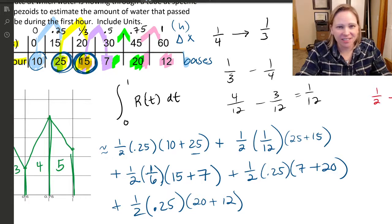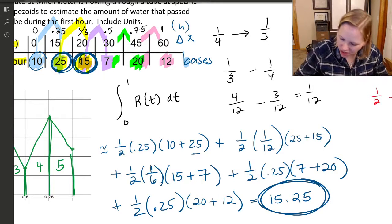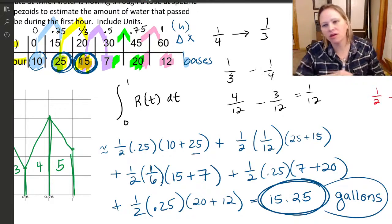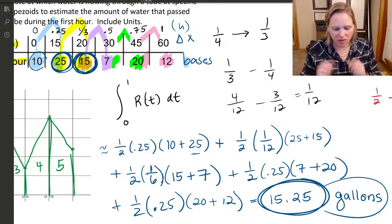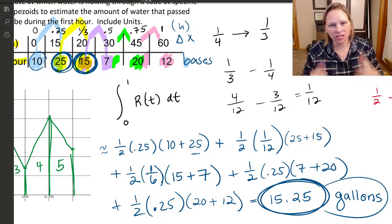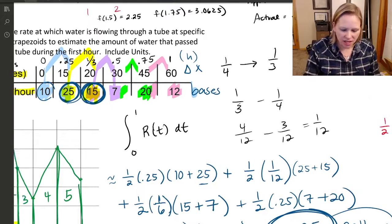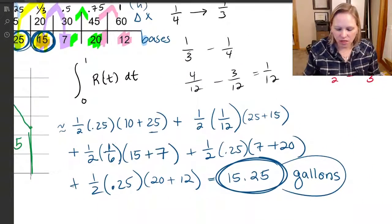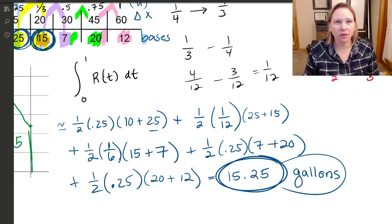In reality, you want to make it easy on your grader. Go ahead and plug those numbers in and tell me what the actual answer is. What we should get is 15.25, and I want to make sure that I include units. We just integrated a rate of change that was gallons per hour. So our result when we evaluate an integral, we should be measuring gallons. This is how many gallons have flowed through this tube. Over the first hour, 15.25 gallons flowed through this tube.